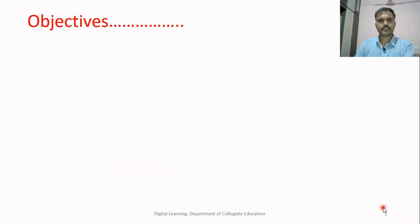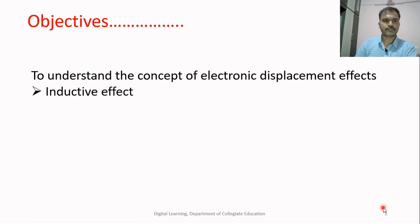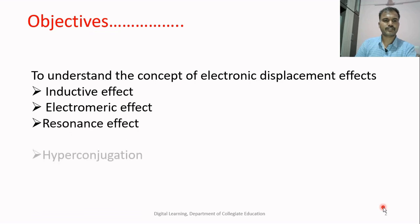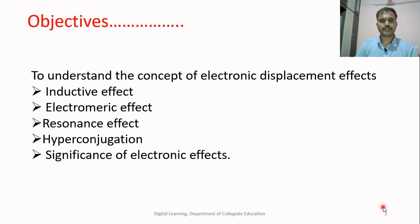The main objectives of studying this topic is to understand the concept of electronic displacement effects, which includes the inductive effect, electromeric effect, resonance effect, hyperconjugation and the significance of electronic effects. In this session, I am going to explain about the basic concepts of electronic displacement effects and the inductive effect only.